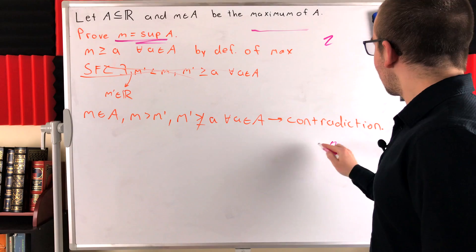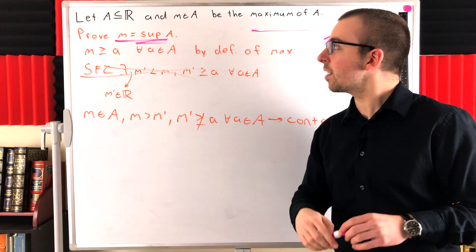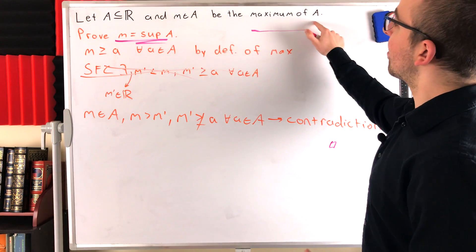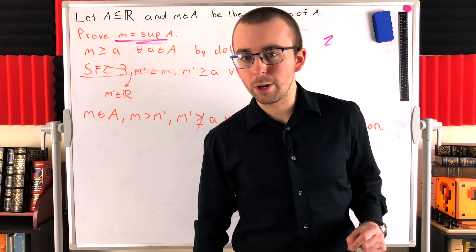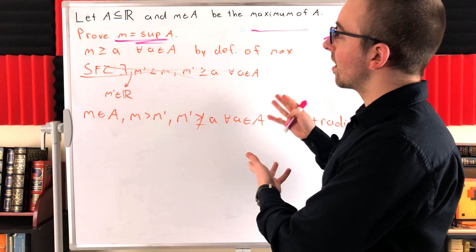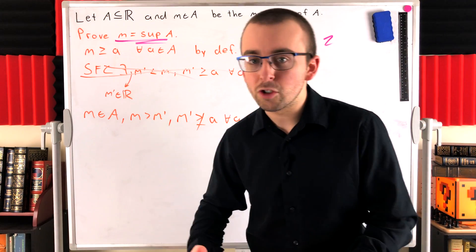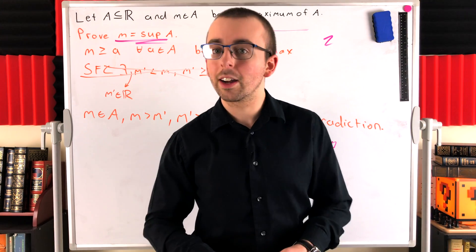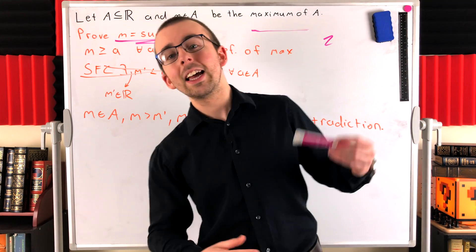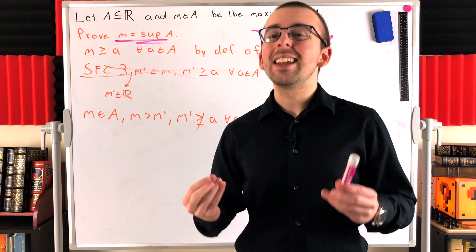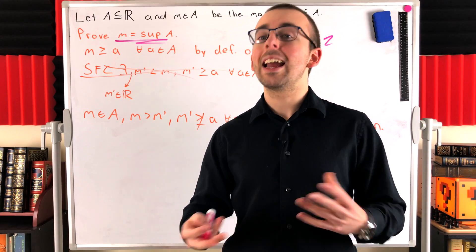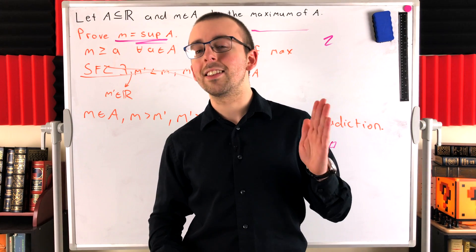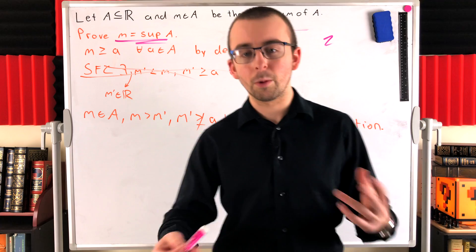Okay so that's the proof. If we've got a real valued set and some maximum of the set, that's got to be the supremum. So similarly we can extend this to functions whose ranges are also just subsets of the real numbers if we're talking about real valued functions. So if a function takes on a maximum value, that's the supremum of the function.